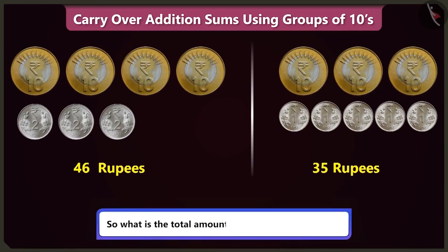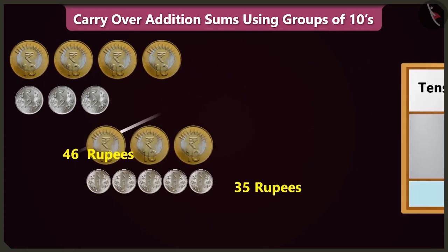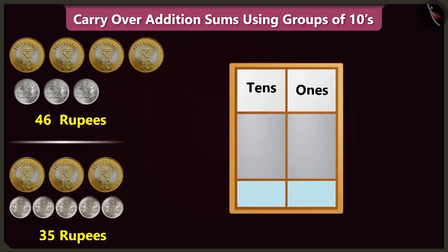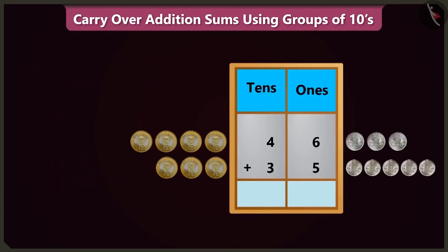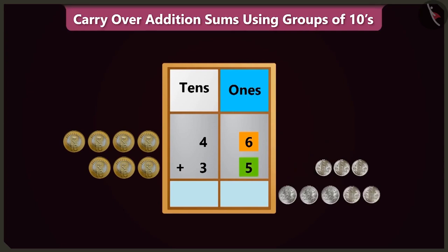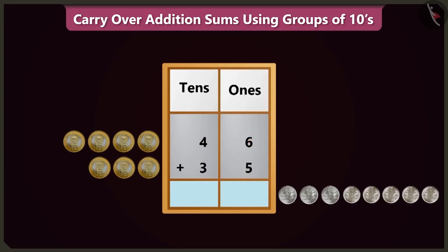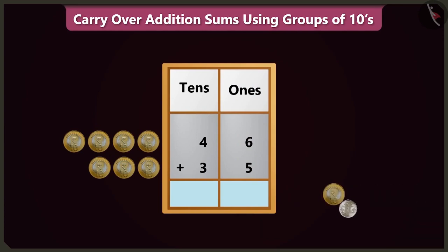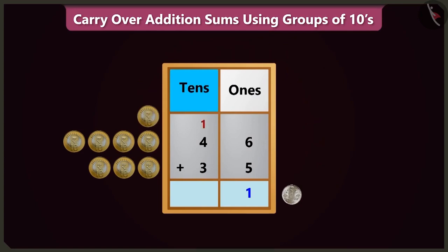So what is the total amount in both the piles of coins? To find that out, we have to write both numbers in the ones and tens boxes. To add 5 to 6 in the ones box, count after 6: 7, 8, 9, 10 — and we will get 11. So 11 means 1 ten and 1 one. We will write 1 in the ones box and carry over 1 ten in the tens box.